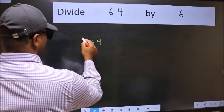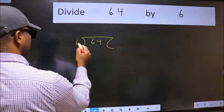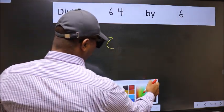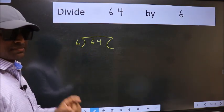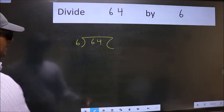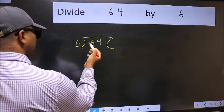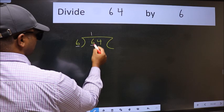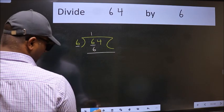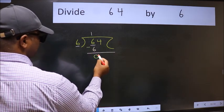64 here, 6 here. This is your step 1. Here we have 6 and here 6. When do we get 6 in the 6 table? 6 once is 6. Now we should subtract. We get 0.